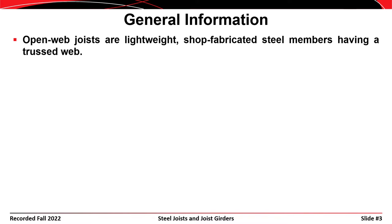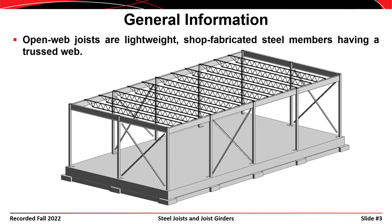Open web steel joists are lightweight shop-fabricated members that have a truss web. It's basically a prefabricated truss that can in some cases take the place of a rolled beam. In a beam subjected to bending moment, most of the material is needed at the top and bottom fiber to resist stresses due to bending. With a steel joist, you put most of the material where it's needed and take it away from the web where it's not necessarily needed. You can see those members shown here in the roof of this small building.